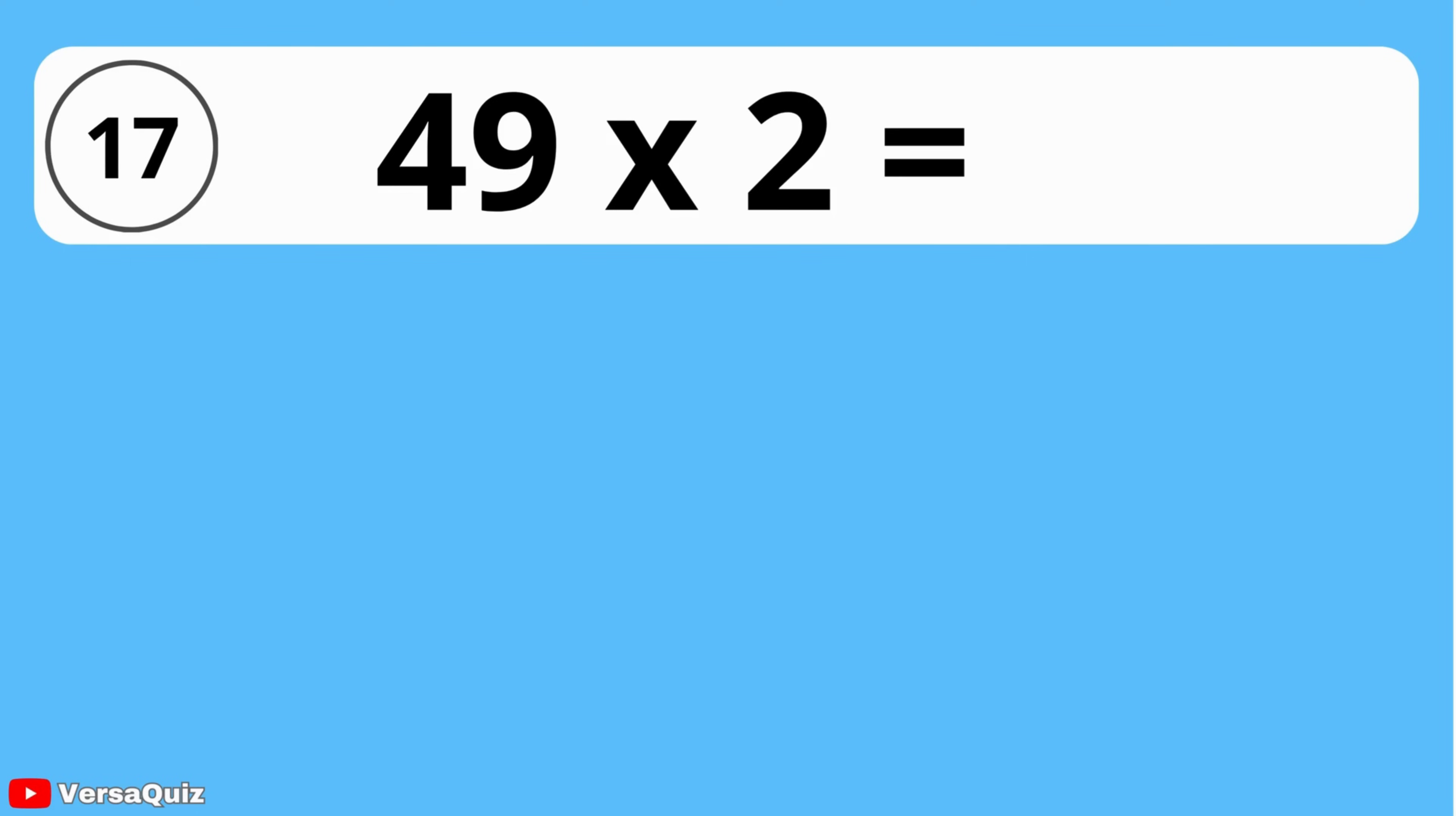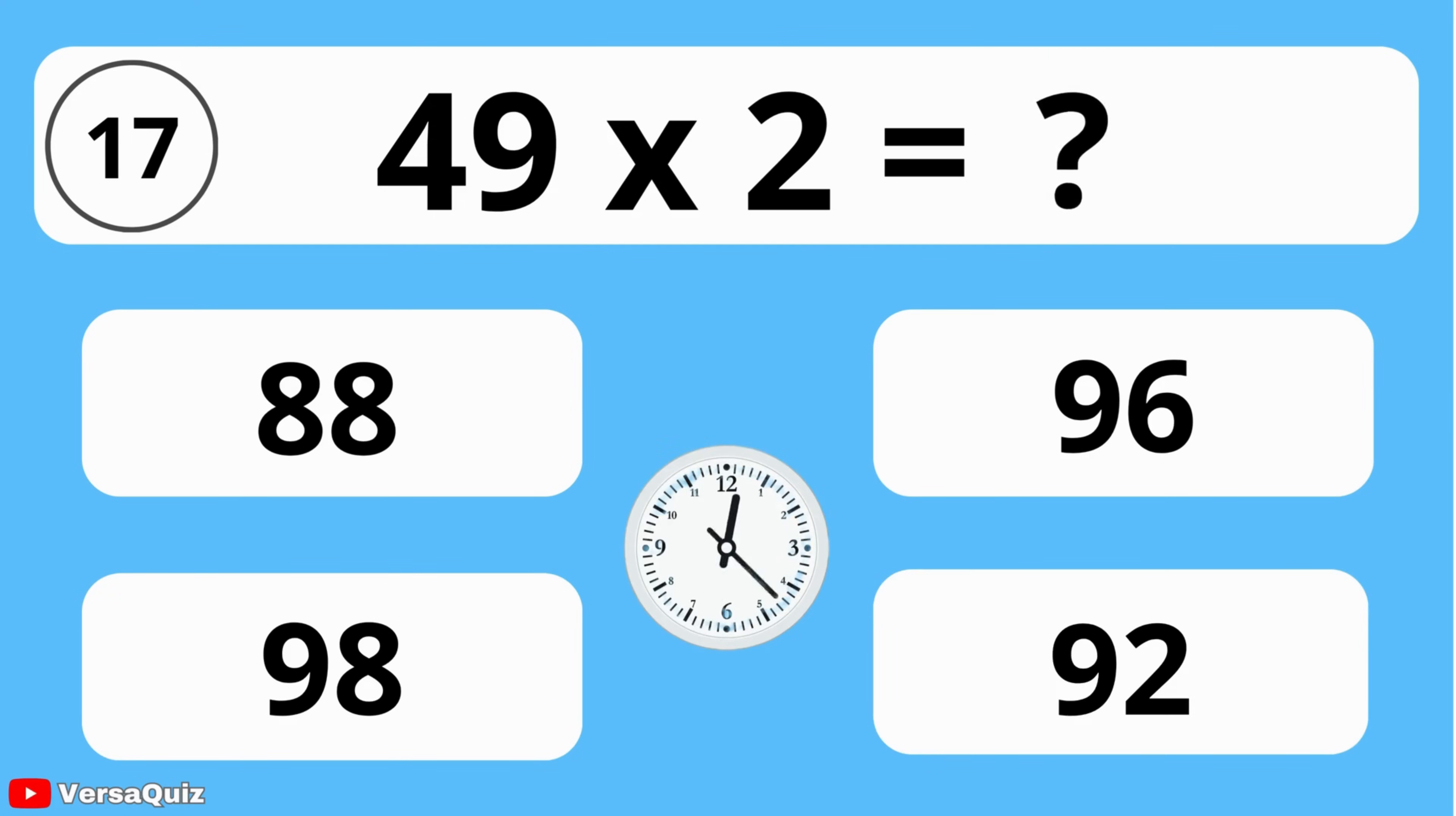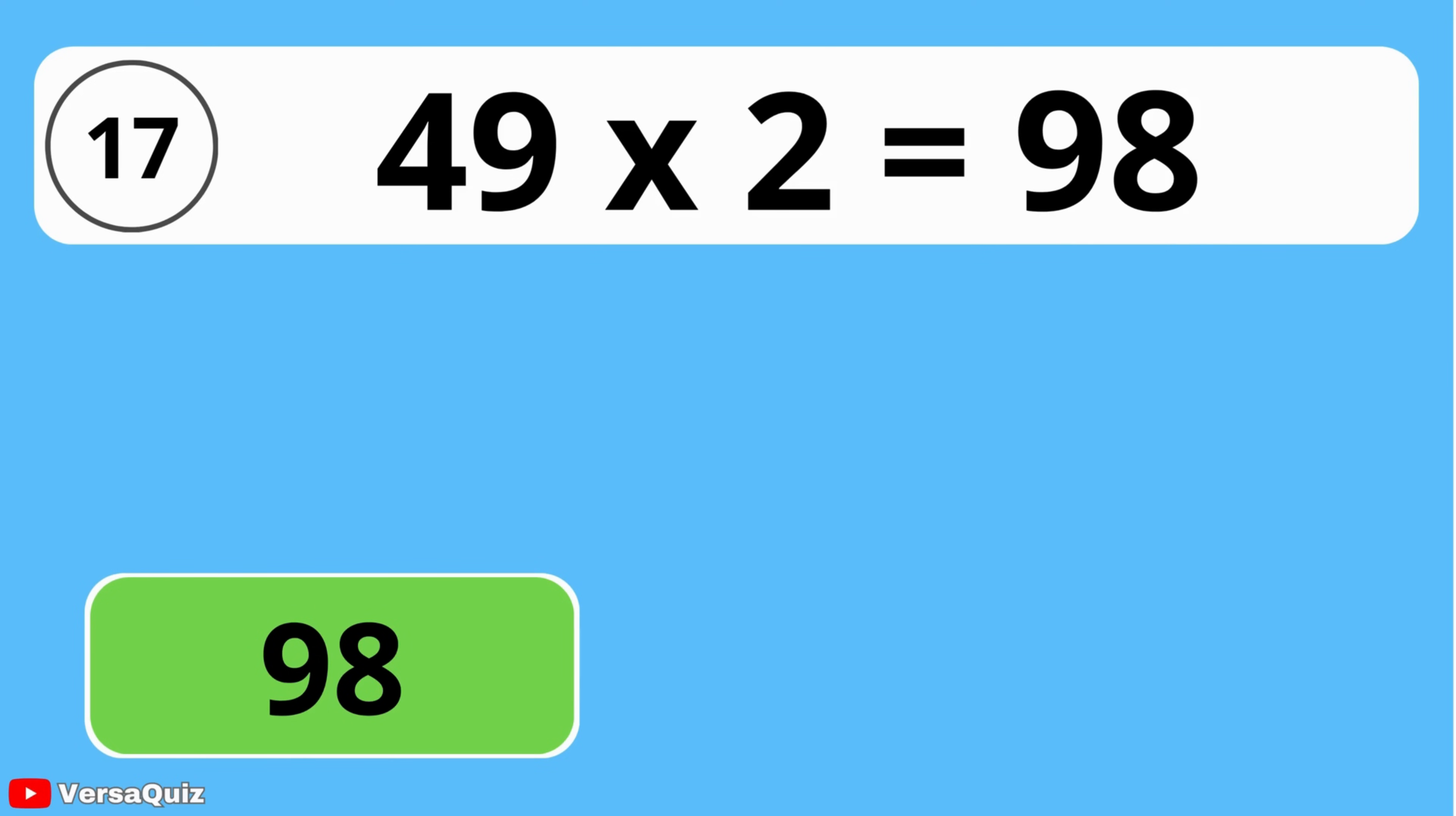What do you get when you multiply 49 by 2? 88, 96, 98, or 92? The result of 49 multiplied by 2 is 98.